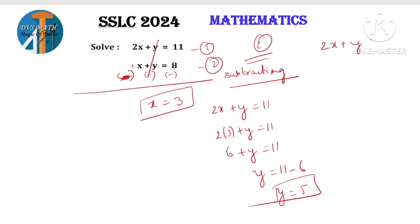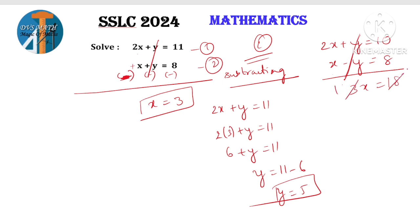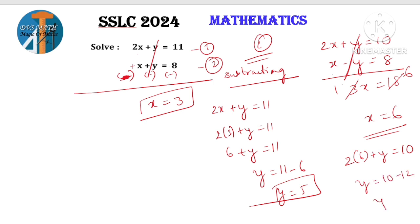Change the equation: 2x plus y equals 10, and x minus y equals 8. Looking at equation 1 — y and y, same coefficient. But one is plus and one is minus — different signs, so go for adding directly, cancel. Adding means no sign change. 2x plus x is 3x. 10 plus 8 is 18. So 3x = 18, x = 6. Substitute into equation: 2 into 6 plus y equals 10. 12 plus y equals 10. So y equals 10 minus 12, y equals minus 2.